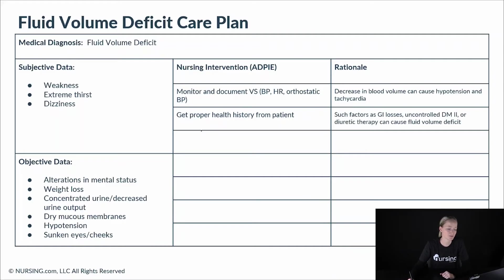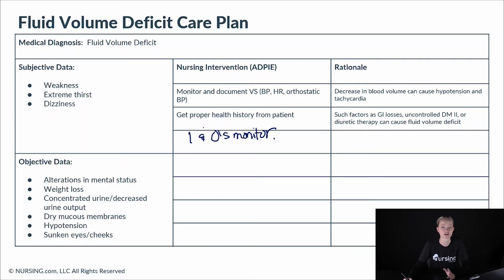We want to make sure we're monitoring their I&Os. We're going to encourage fluid intake and monitor their urine output, noting the urine color and amount — is it clear? Is it cloudy? We want to make sure patients are taking in an adequate amount of fluids, as concentrated or decreased urine can indicate dehydration.